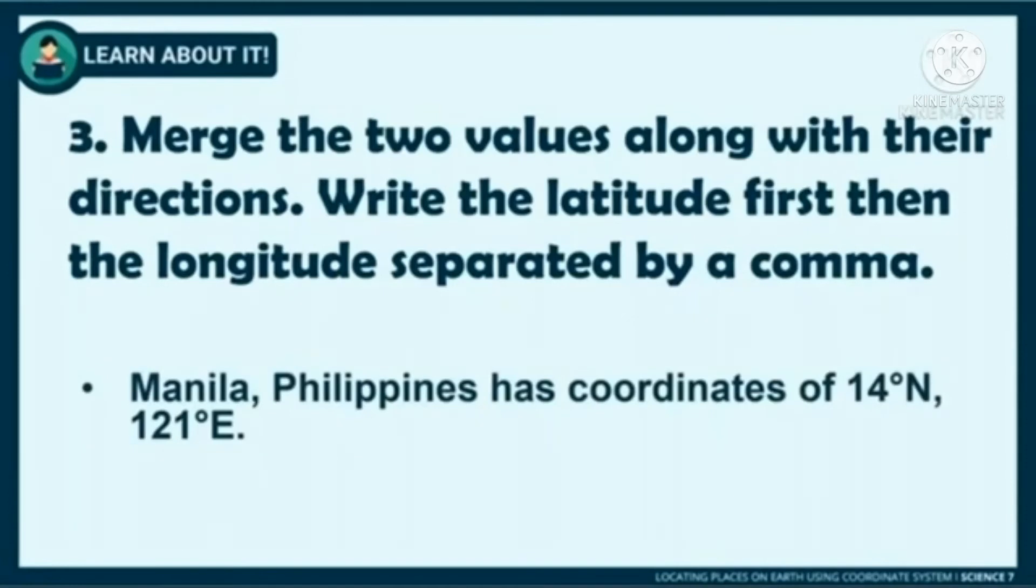Last step, merge the two values along with their directions. Write the latitude first, then the longitude separated by a comma. The coordinates represent the intersections specific to a location.